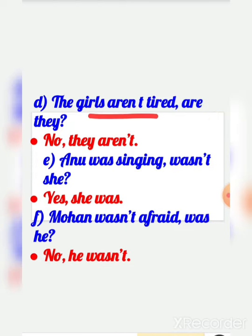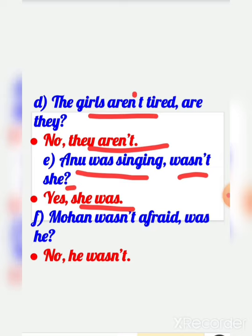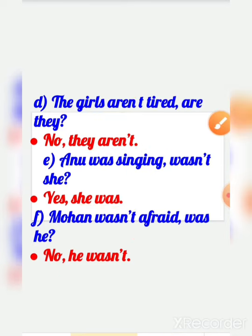D: 'The girls aren't tired. Are they?' — No, they aren't. E: 'Anu was singing. Wasn't she?' — Yes, she was. F: 'Mohan wasn't afraid. Was he?' — No, he wasn't.